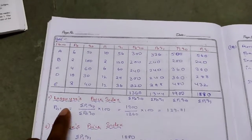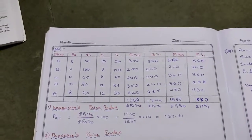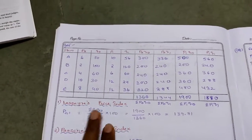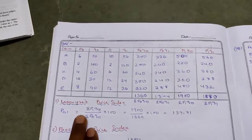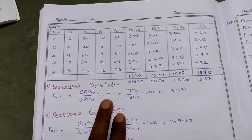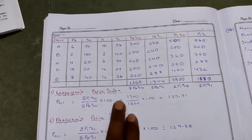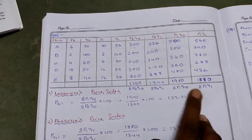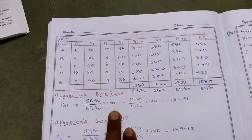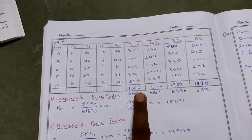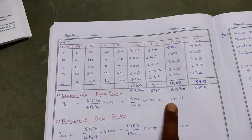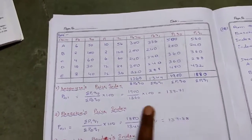Now we apply the formulas to calculate each method. First, Laspeyre's price index: P01 = (ΣP1Q0 / ΣP0Q0) × 100. ΣP1Q0 = 1900, ΣP0Q0 = 1360. So 1900 / 1360 × 100 = 139.71.